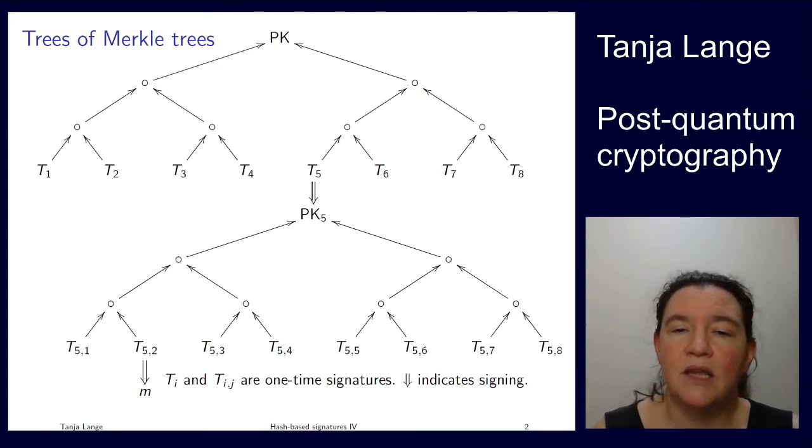So then each Merkle tree always has an authentication path. So for the bottom tree this would be the one-time signature and then the authentication path would need to include this node, public part, this node, and this node. And then you can compute this public key and compare it with it.